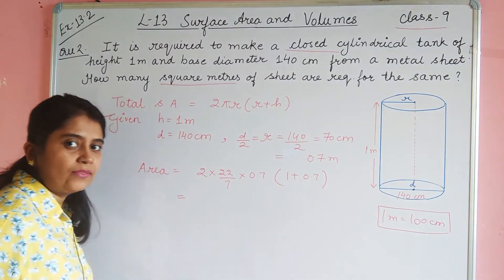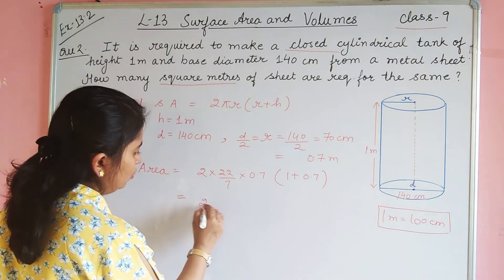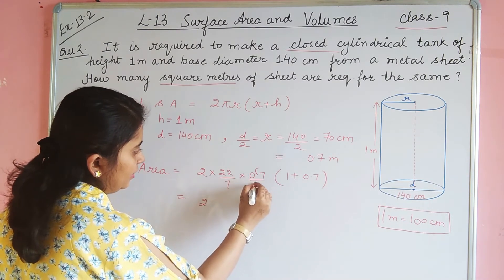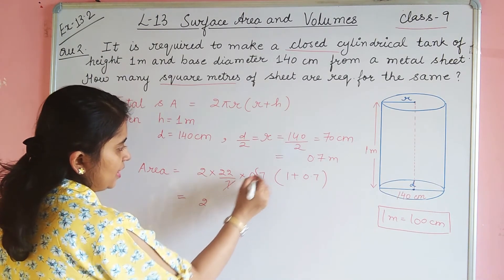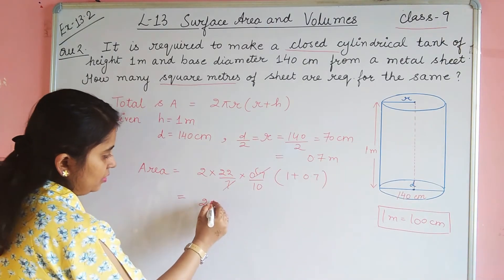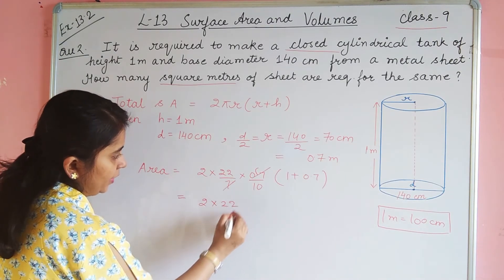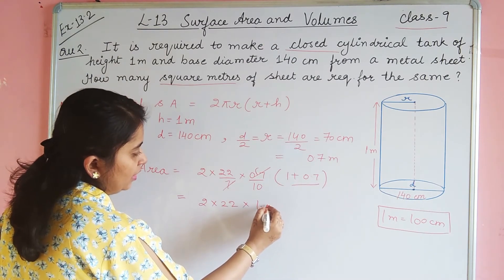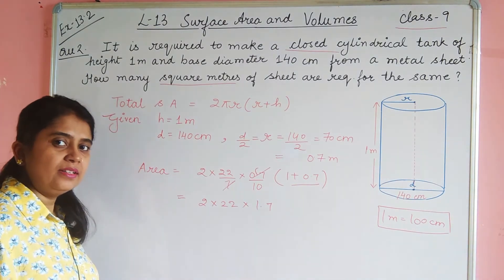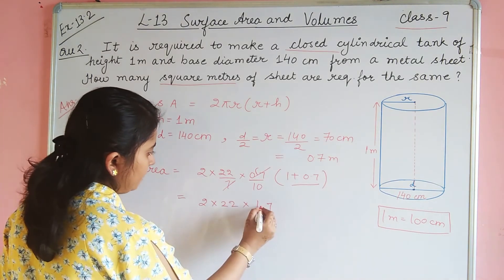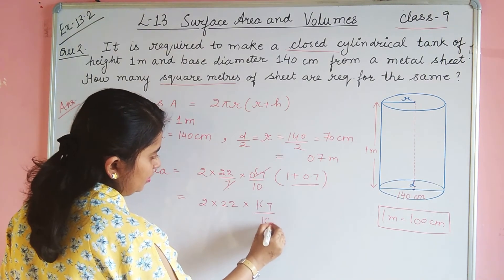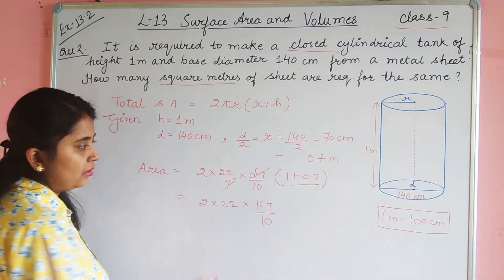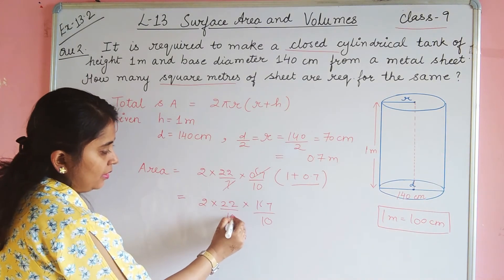Solve करते हैं इसको. 2 point अटाएंगे, नीचे 10 आजाएगा और 7 से 7 कट जाएगा. So 2 multiplied by 22, और यहां जब इसको open करेंगे आपको मिलेगा 1.7. इसका point अडादीजिये, आपको मिल जाएगा 10 और एक 10 यहापर already है.